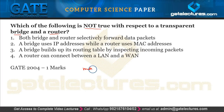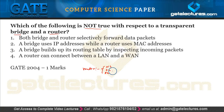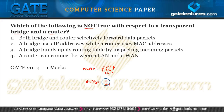A router works in three layers: the physical layer, data link layer, and network layer. It does not work in the transport layer and can read everything in a data packet up to the network layer. A bridge, however, only works in two layers — physical and data link — and cannot read any information in the network header.